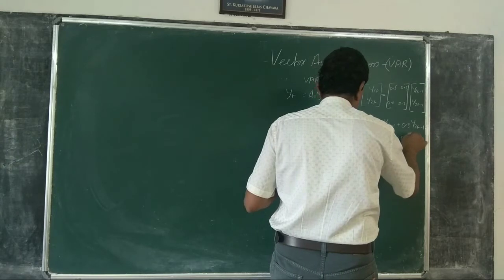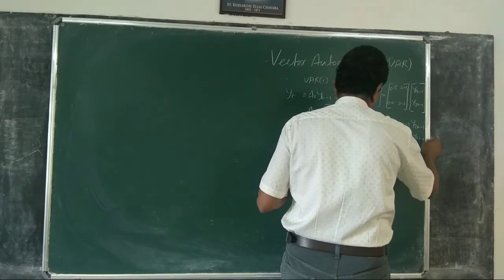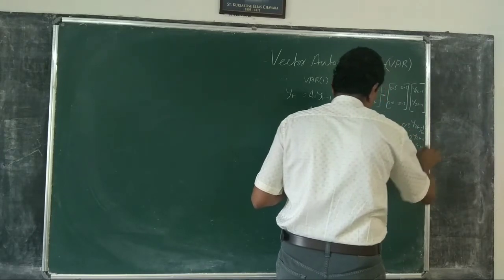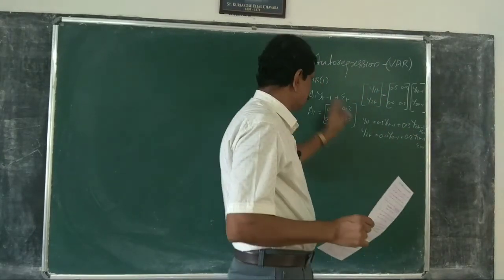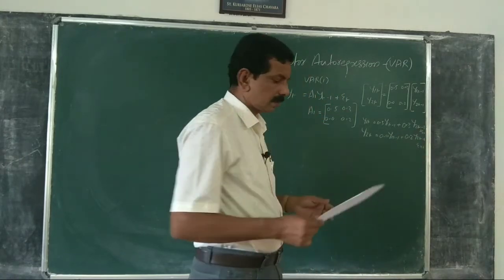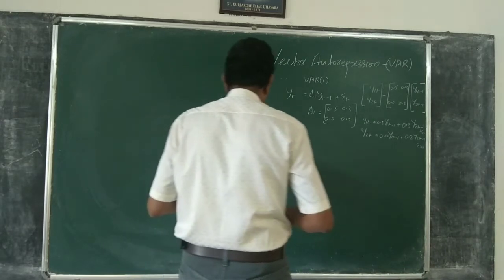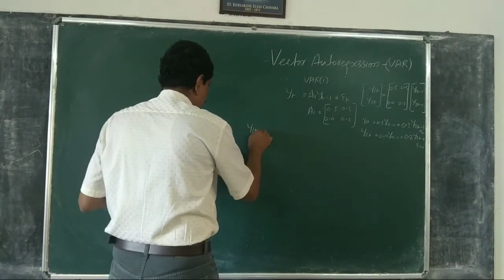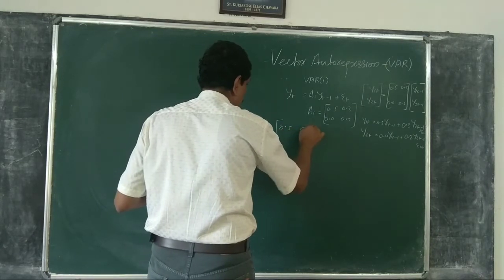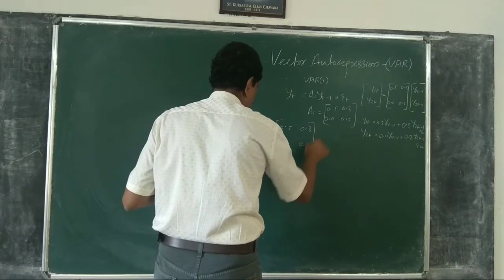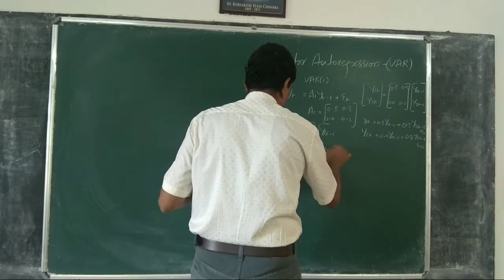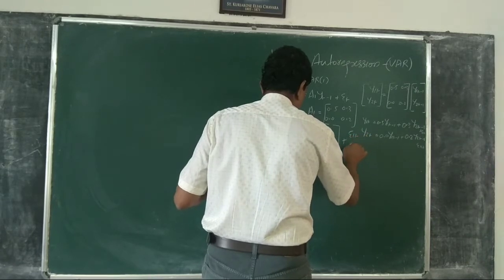So the model is written as: the vector [y1t, y2t] equals the matrix [0.5, 0.3; 0.0, 0.2] times [y1 t minus 1, y2 t minus 1] plus the vector [epsilon 1t, epsilon 2t]. So this is a VAR with two variables y1 and y2, one lag of y1 and one lag of y2 taken — a simple one.